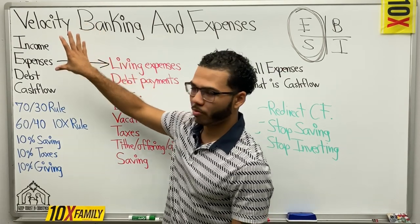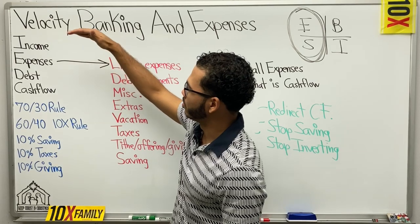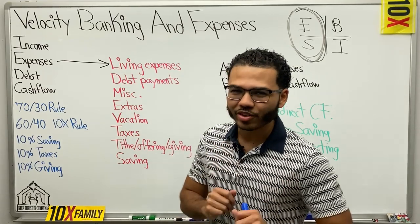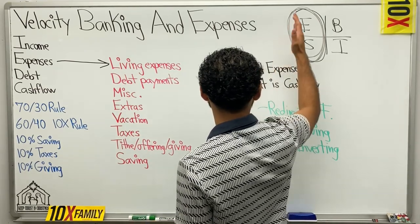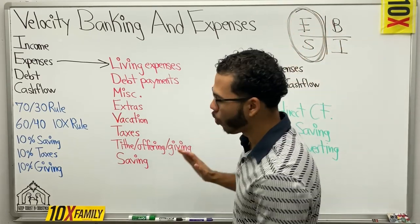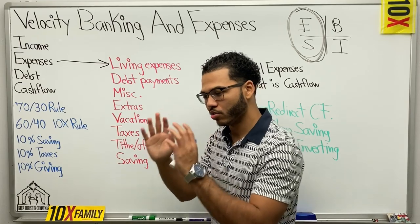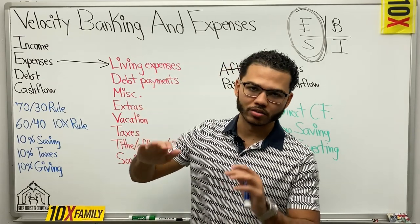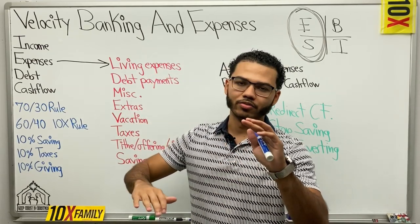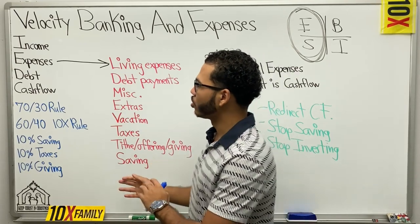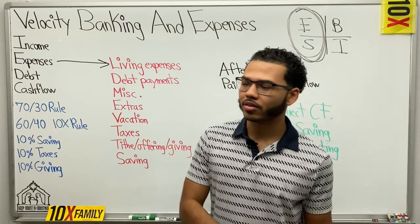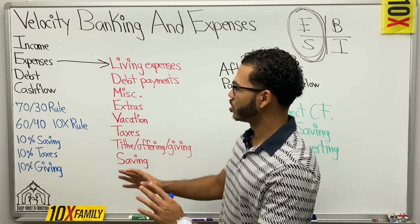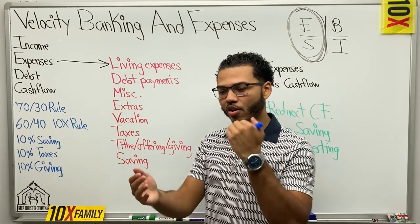As I always go over in all my videos, we have to know our four major numbers: what are you making per month net, what are your expenses, what's your debt, what's your cash flow. This video is specifically for employees — people on the E and S side of the cash flow quadrant — meaning you make a steady paycheck every single month, whether salary, hourly, bi-weekly, semi-monthly, whatever it is. I'm talking to those people.